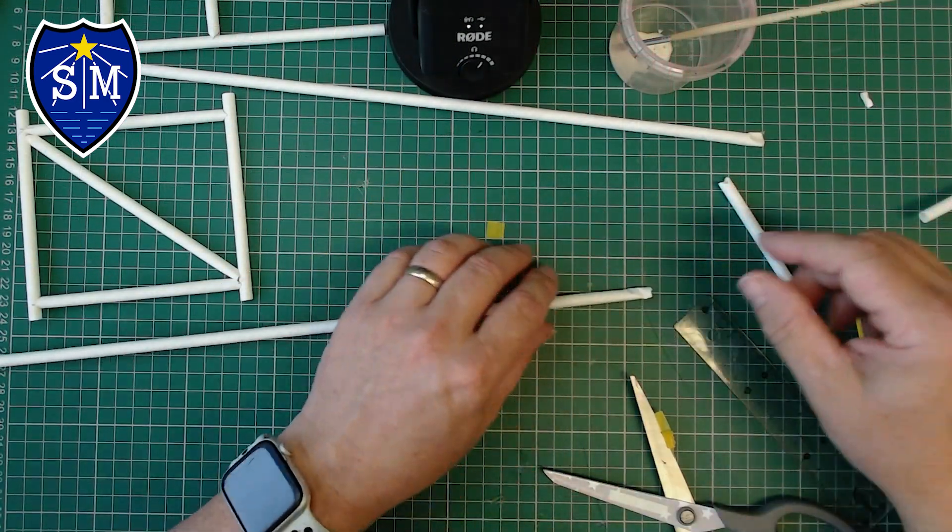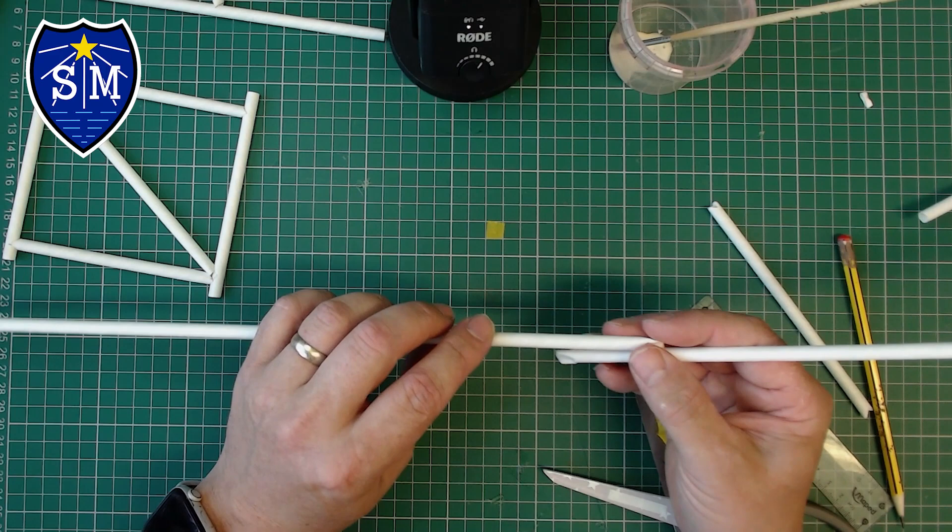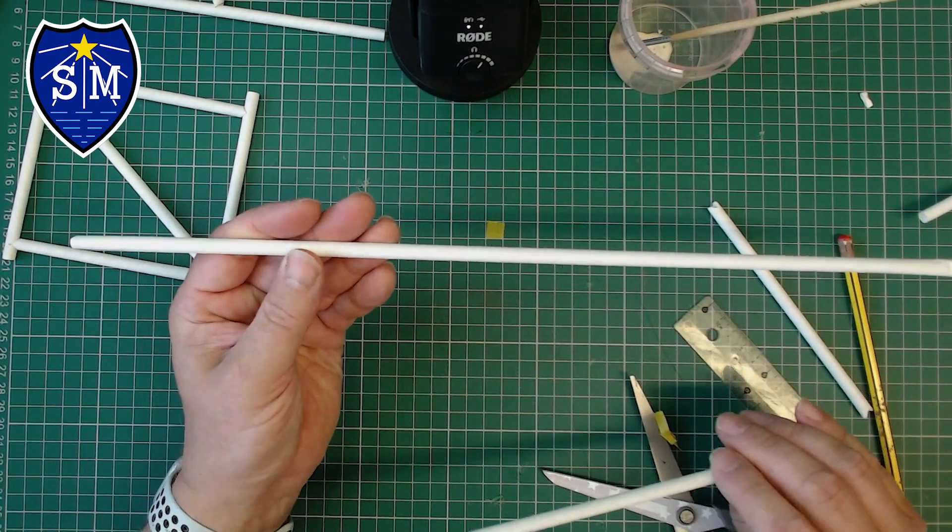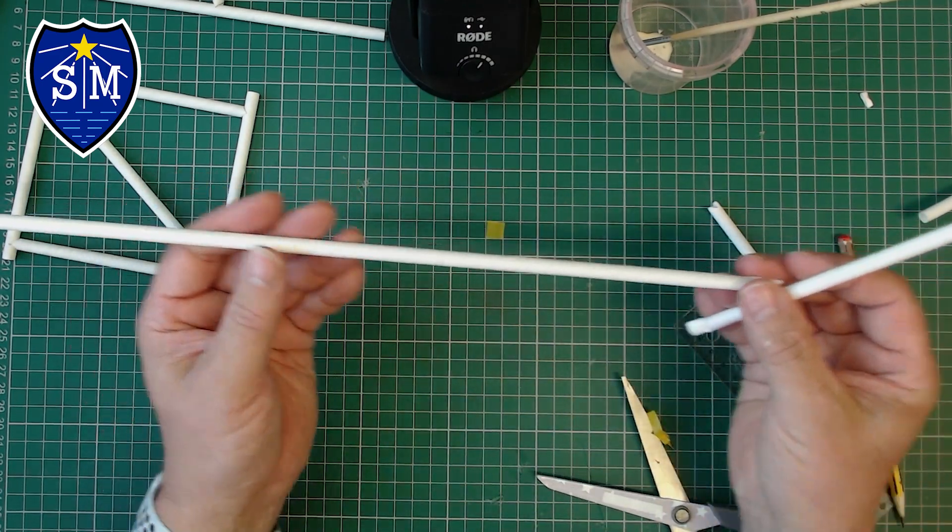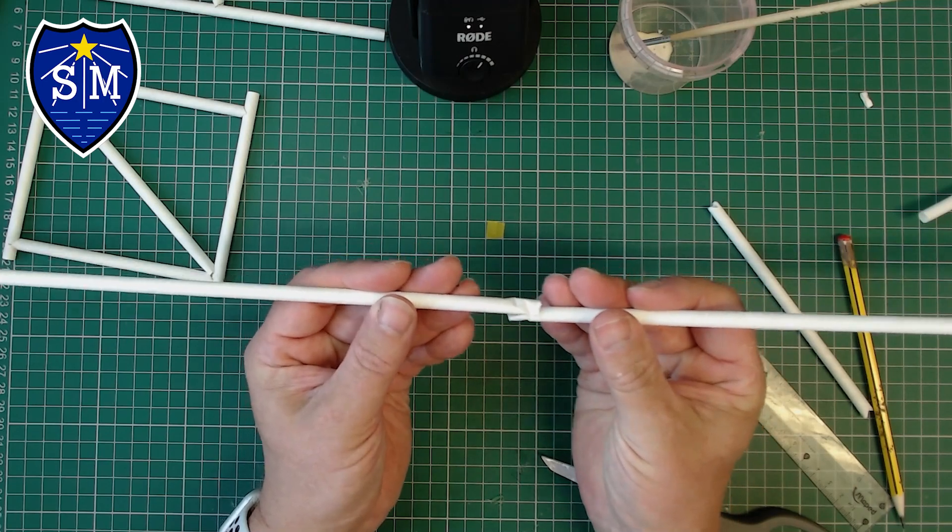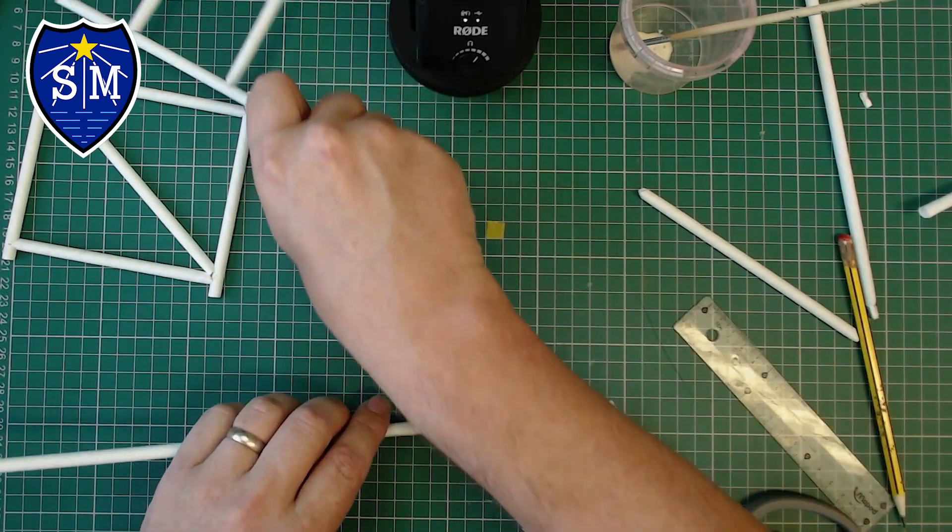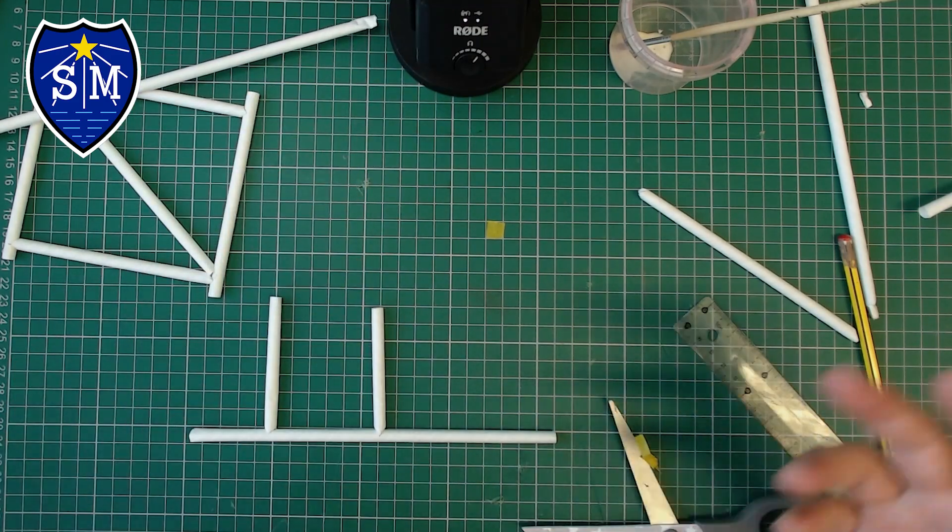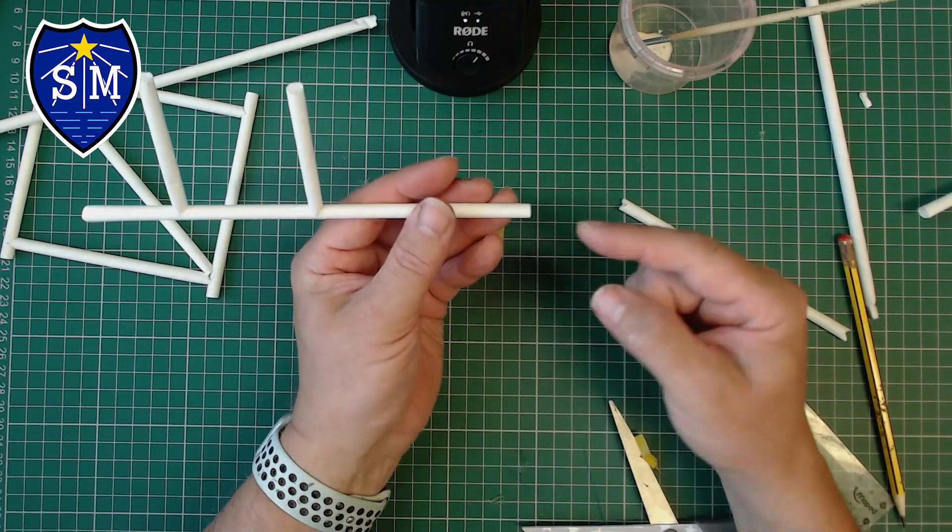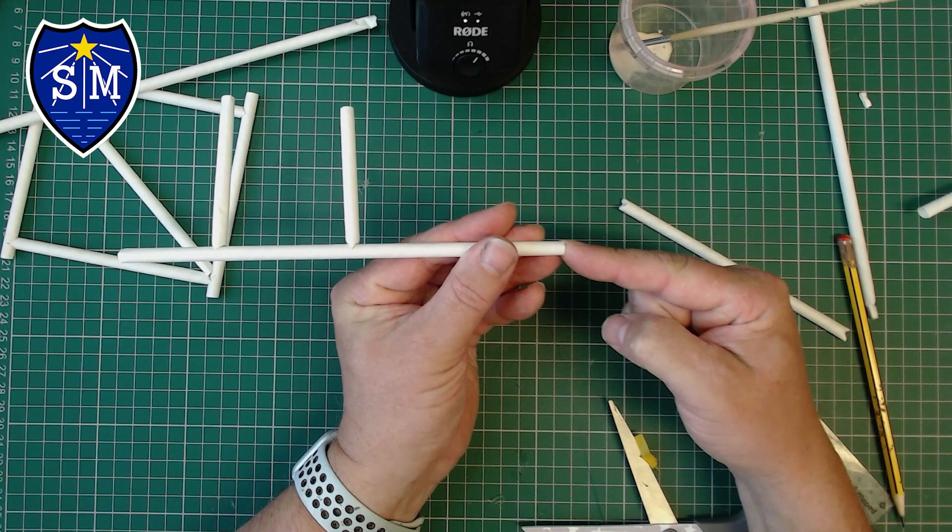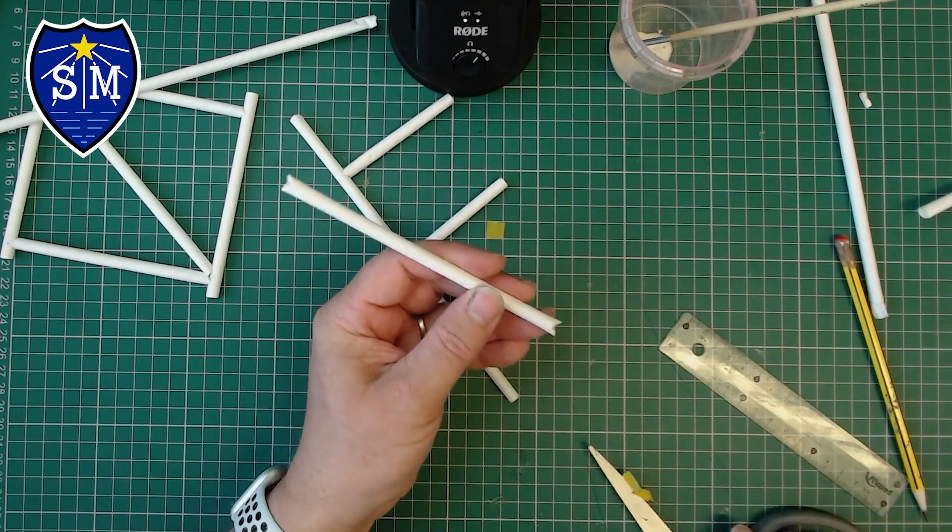The third technique we're going to look at is: let's say I want to make a really long bridge and we're limited by the length of our straws. How do we connect together our straws to make them longer?